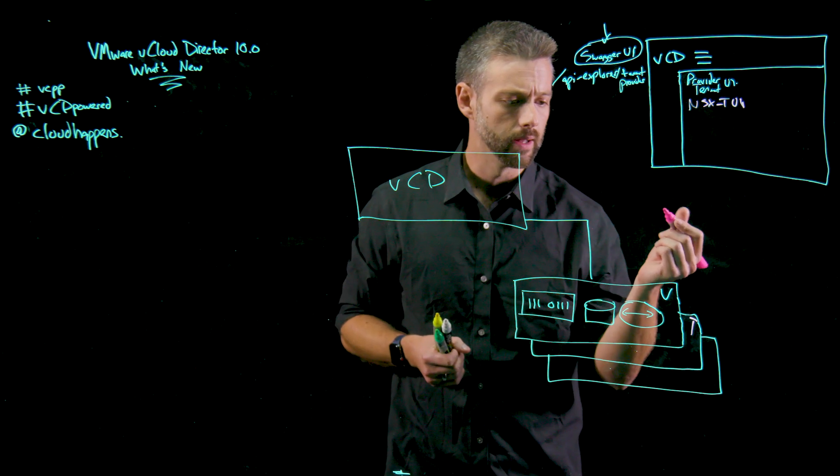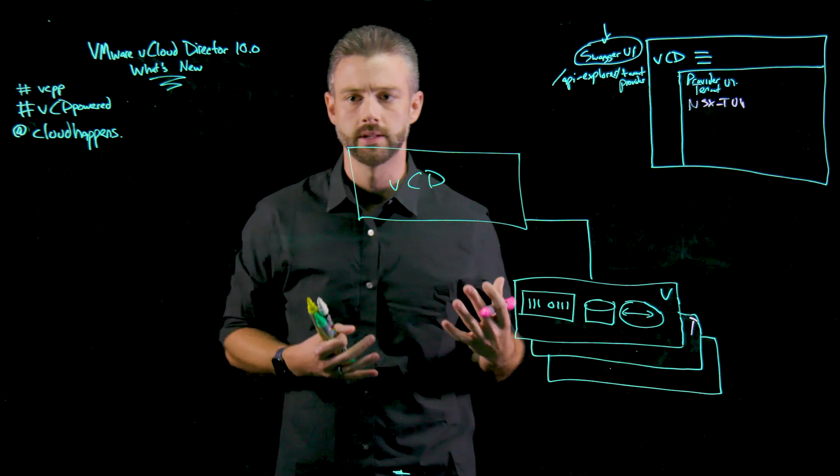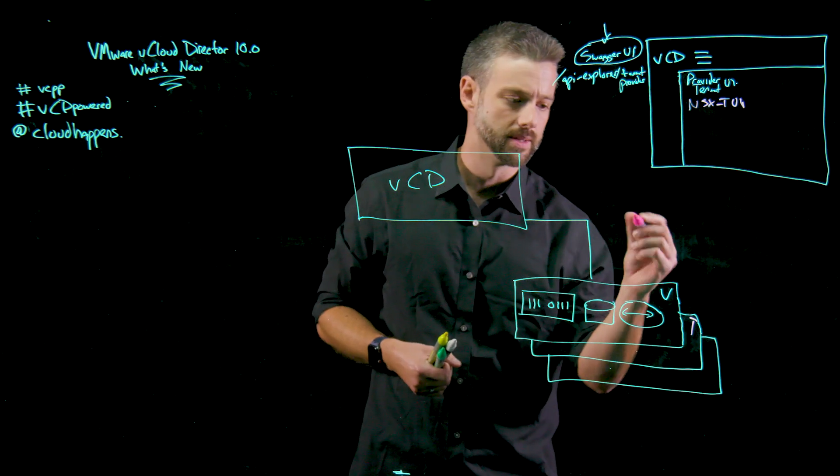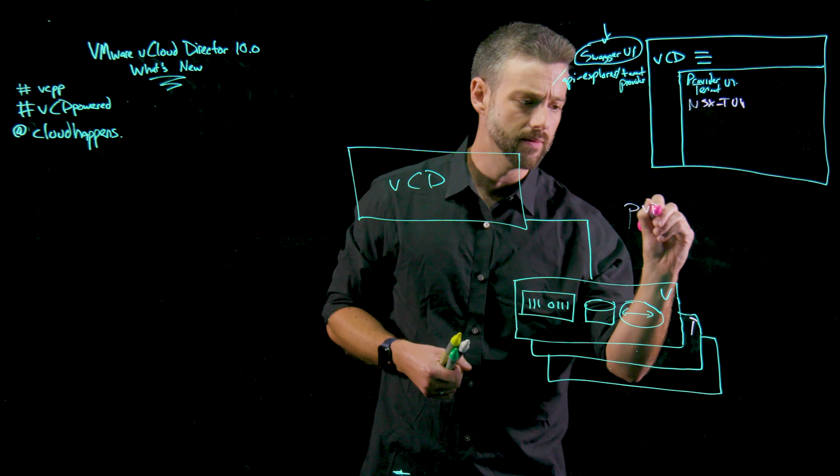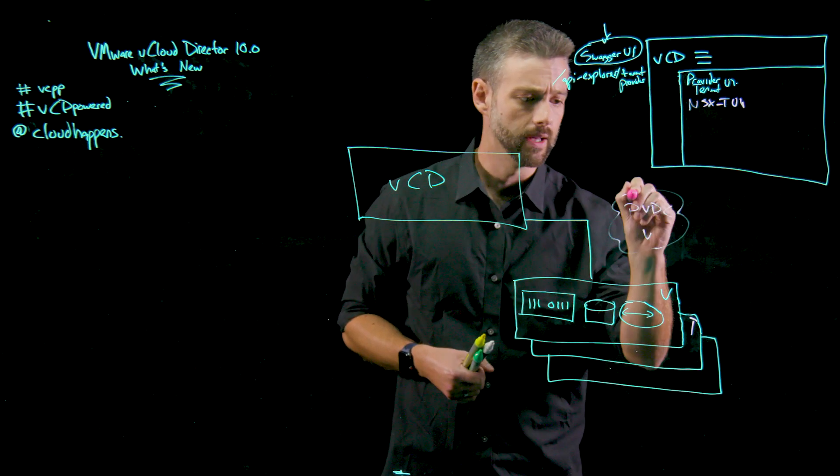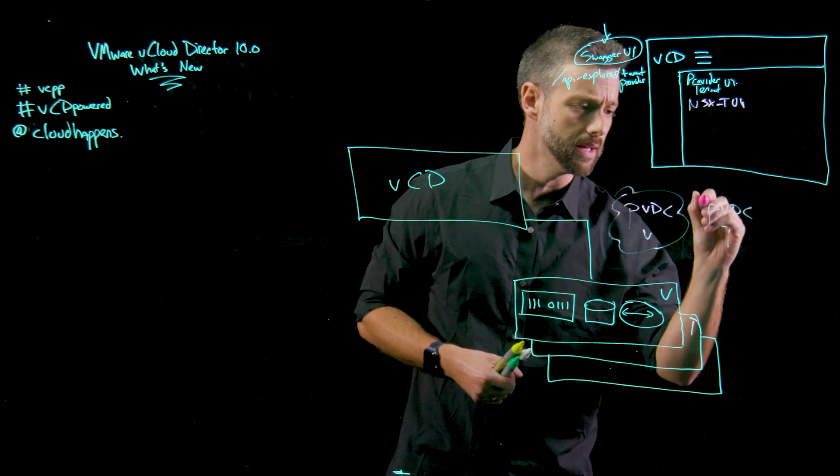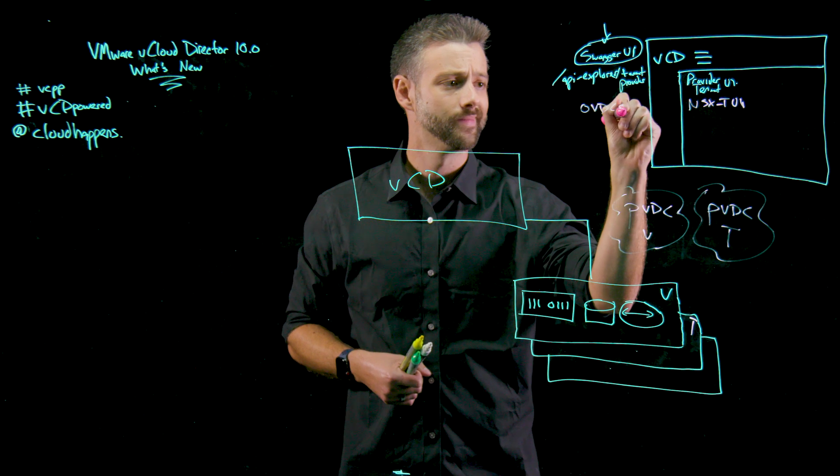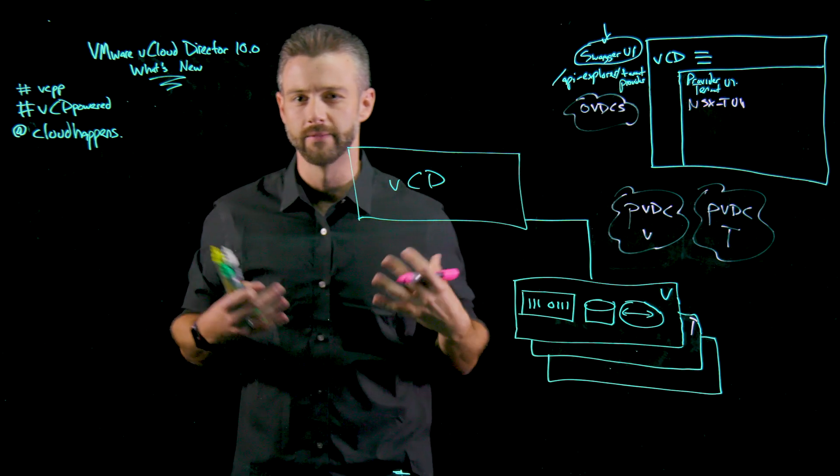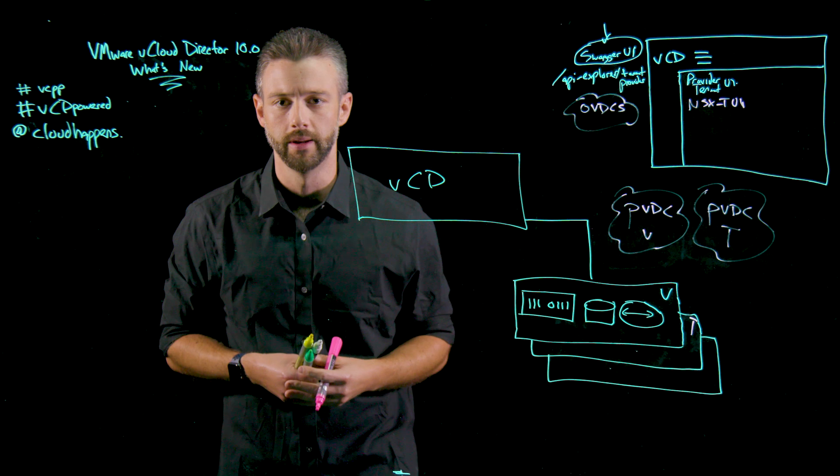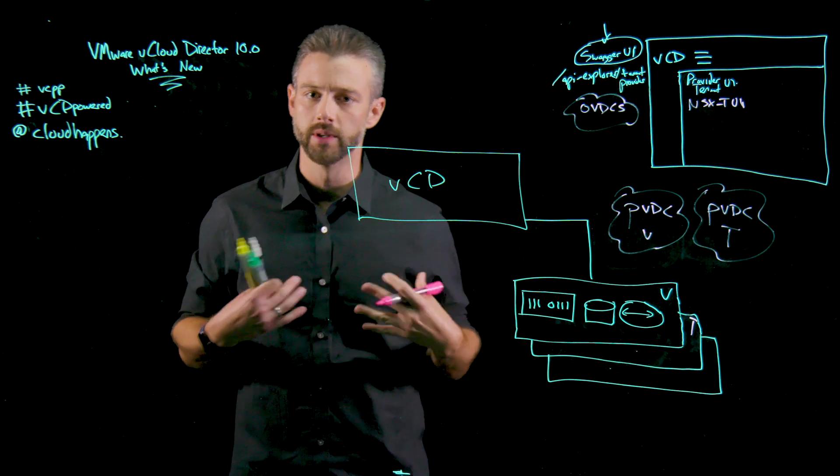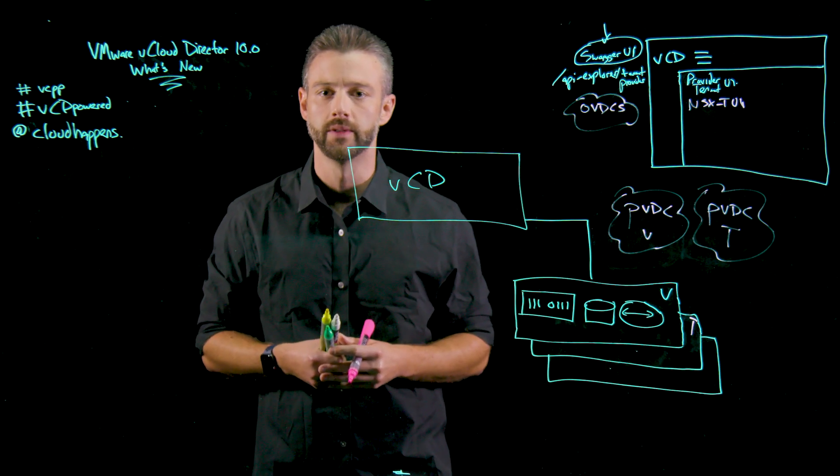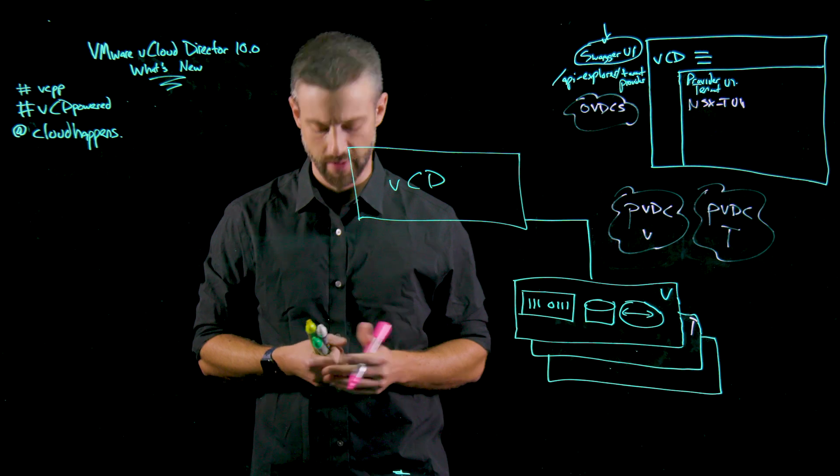But one thing I do want to call out is everybody is really discussing how do I transition from NSX-V to NSX-T? It's not an all or nothing proposition. I can have a PVDC that is backed by V, a PVDC backed by T, and we can expose OVDCs that the tenant uses that provides that virtual network service capability. And the tenant really just gets that experience of, I'm consuming those services at the end of the day. vCloud Director is taking care of that heavy lifting on the back end and making sure everything is taken care of.